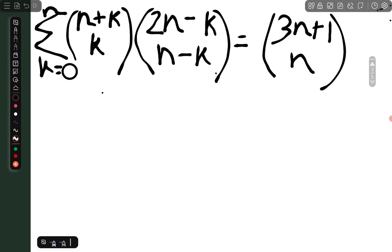Here we are presenting you a nice problem from Combinatorics. Let's see the problem. Here is the statement you have to prove: summation over k equals 0 to n, n plus k choose k into 2n minus k choose n minus k equals 3n plus 1 choose n.